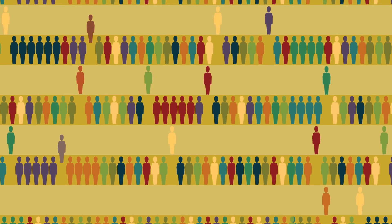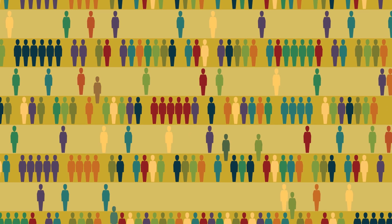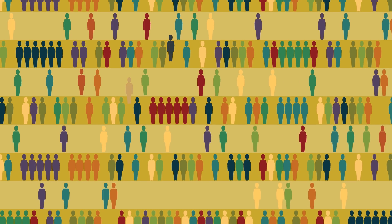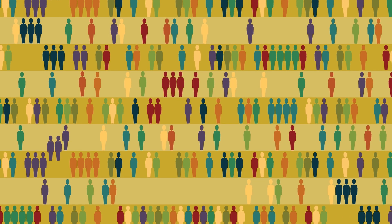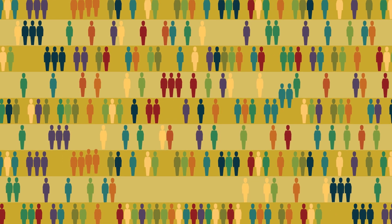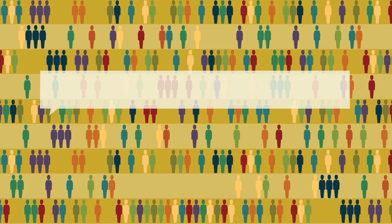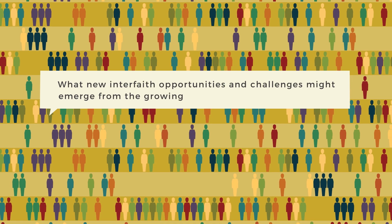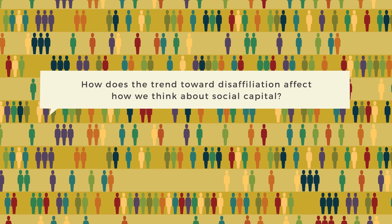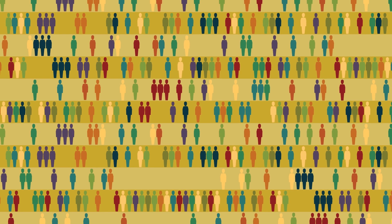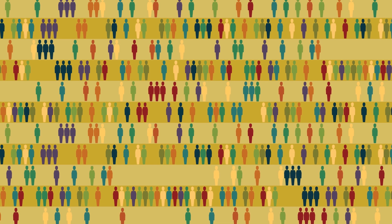The second trend is disaffiliation, most notable in the increasing number of people who are choosing to leave their home religious communities for a variety of reasons. This is one cause of a rise in the number of people who retain their religious identity without a community, the number of people who identify as spiritual but not religious, and the number of people who check 'none' for religious affiliation. The third trend is division, which occurs when a religious community splits into multiple sections, creating new communities distinct from one another along the lines of disagreement. There are many questions that these trends ought to raise for interfaith leaders. What new interfaith opportunities and challenges might emerge from the growing diversity of the United States? How does the trend toward disaffiliation affect how we think about social capital? Being knowledgeable about current trends will help you understand the needs and anxieties of particular religious communities and may offer insight into some of the dynamics between people around you.